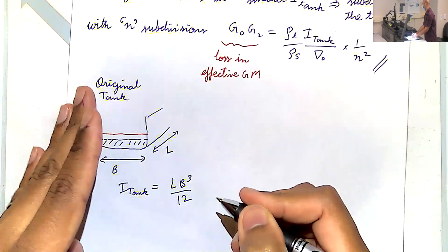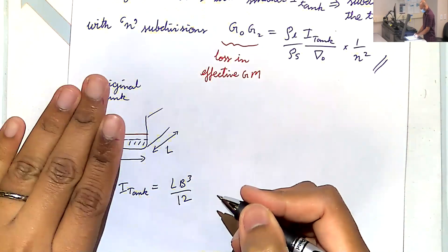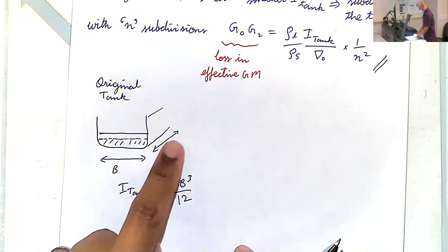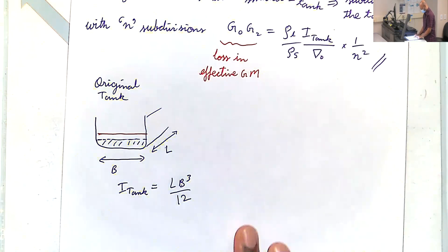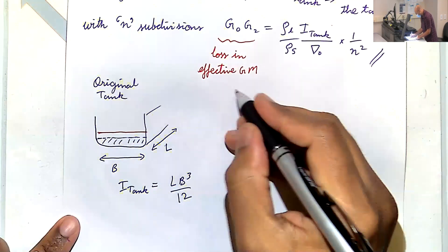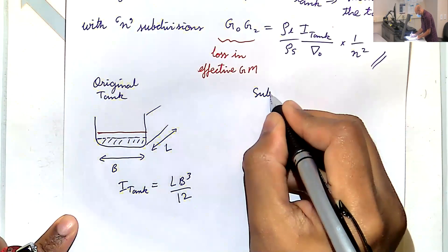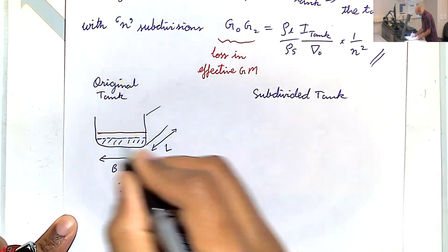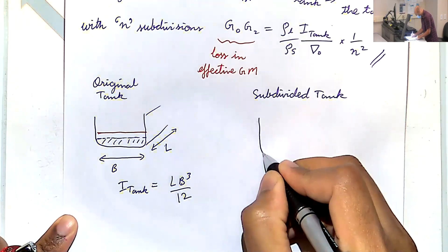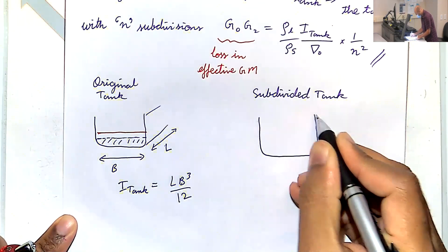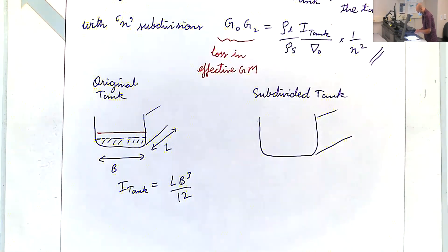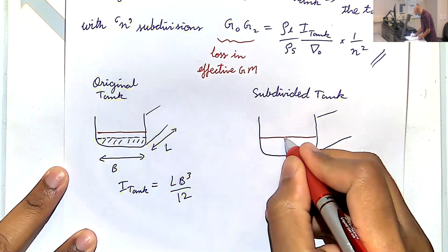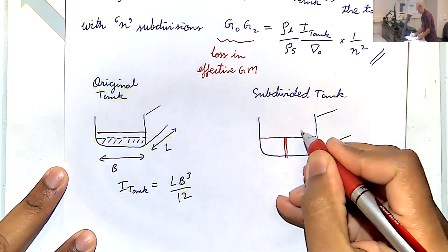We're talking about sloshing in this direction. The base is length L and height is B. For a subdivided tank — same exact thing — here is our tank and we partition it with a wall running all along.